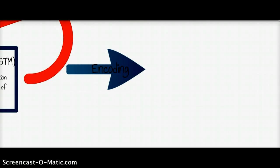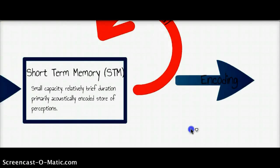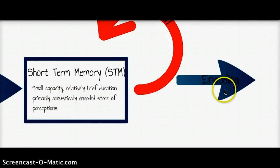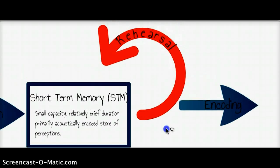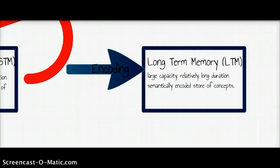Sufficient rote rehearsal of data or information in short-term memory will result in encoding. In short-term memory it was all acoustically encoded. The encoding that takes place with sufficient rote rehearsal is of course the famous semantic encoding that they talk about, which passes stuff into long-term memory. Now long-term memory is a relatively long duration, large capacity storage system that uses meaning or semantics. So we store not sensations, not perceptions, but concepts and conceptions.